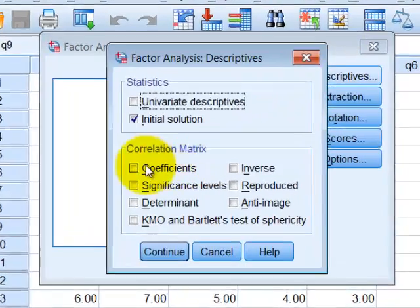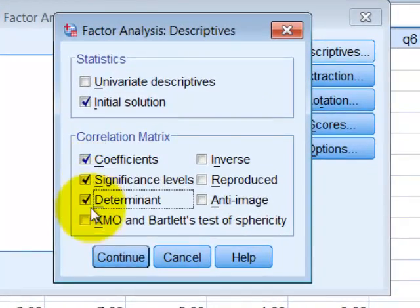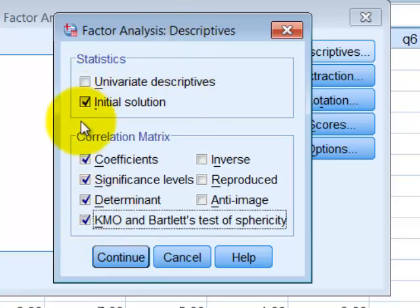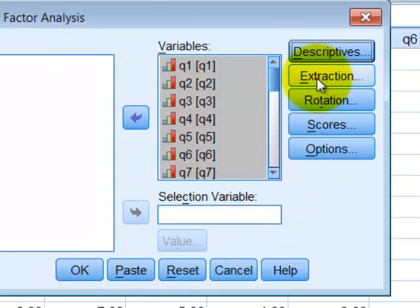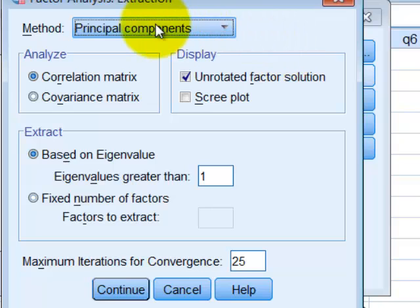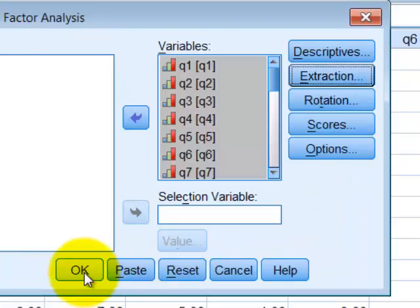We're going to go to Descriptives. We want coefficients, determinants, KMO, and that's all we need here. Extraction - make sure you're under Principal Component. And we always want the scree plot. Click Continue, and then we should just click OK.